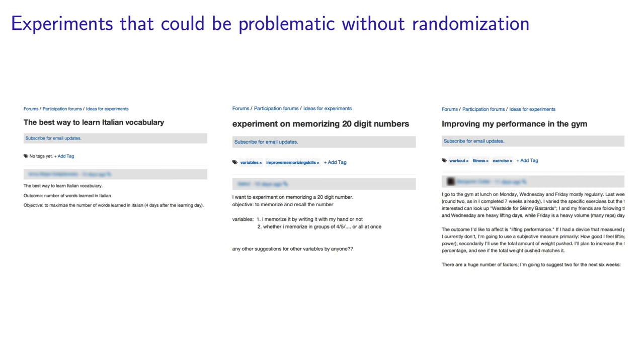In the discussion forums, a number of you have proposed experimental designs that might be confounded by disturbances if you don't randomize the trials. For example, if you experiment with a way to learn a new language, or multiplication tables for your child, or going to gym, or memorizing 20 digits, every time you do one of those experiments, you are naturally going to get better and better, simply because you are practicing, and not necessarily due to the experimental conditions.